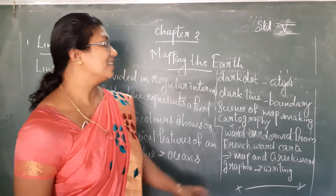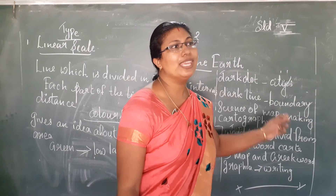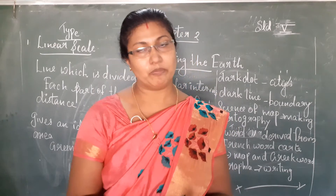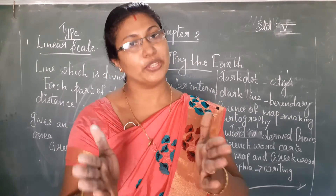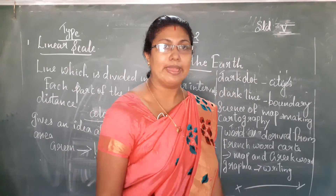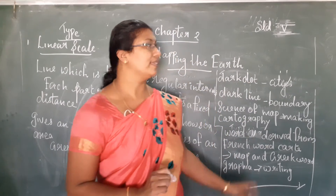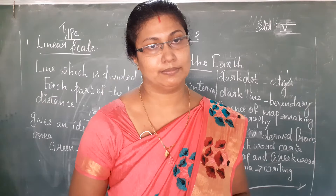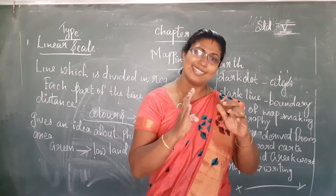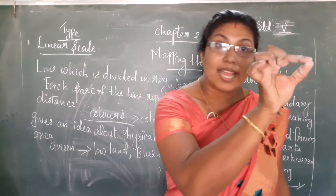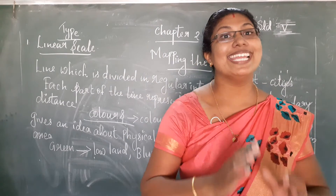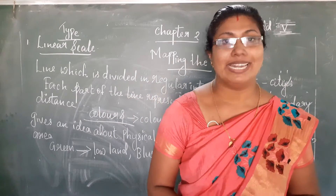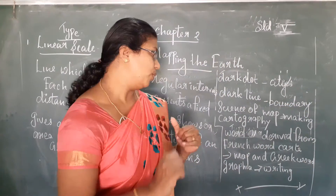When we go through the map, we can see dark dots. If you have a map with you — or when you go through Google or YouTube, just take a picture of the map — you will be able to understand all these things. Dark dots indicate city. Then dark lines are also there; we can see dark lines on the map, and those dark lines indicate boundary.